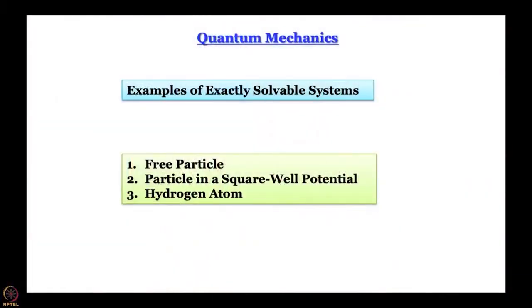So, what we will do is demonstrate this by working with exactly solvable systems. First we introduce the quantum mechanics of a free particle—something that moves without interacting with anything else and therefore experiences no potential energy. For a free electron V(x) = 0. We will then move on to a particle in a one-dimensional square-well potential, and finally to the hydrogen atom.